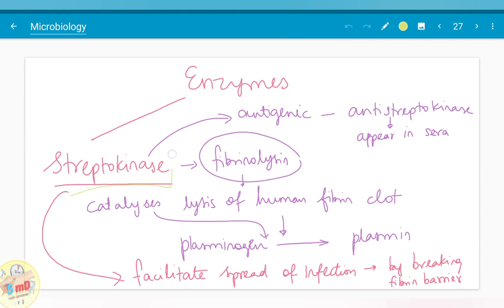The second enzyme is streptokinase. Streptokinase is also antigenic in nature and antistreptokinase appear in sera which is helpful in diagnosis. It is also known as fibrinolysin because it catalyzes the transfer of plasminogen to plasmin. That is, it helps in the lysis of the human fibrin clot. Therefore fibrinolysin denotes the function of streptokinase. It has pharmaceutical purpose also and it facilitates spread of infection by breaking the fibrin barrier.